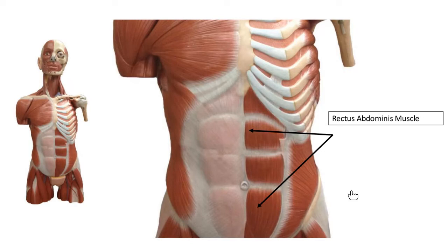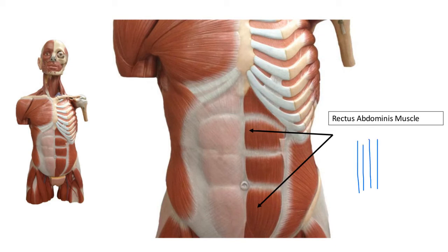The rectus abdominis is the six-pack muscle. We talked about this muscle when discussing parallel muscle fibers — the fascicles are parallel, which gives this muscle high endurance but it's not going to be terribly strong. It always seemed like I fatigued really fast doing push-ups.